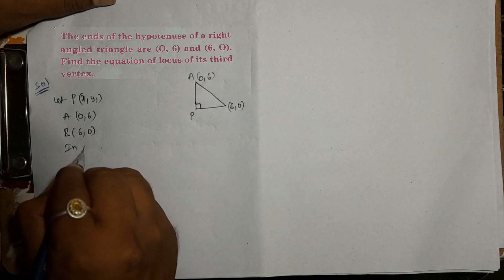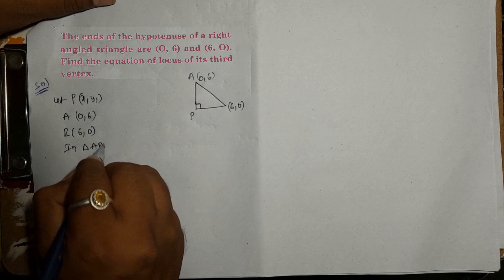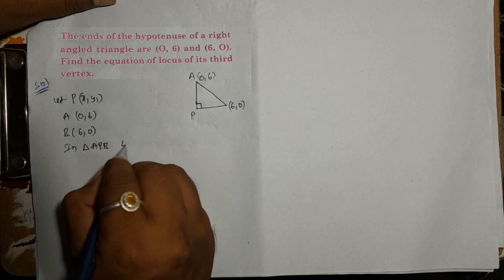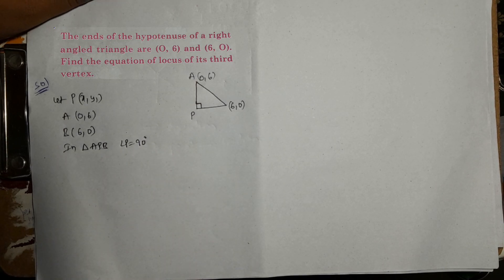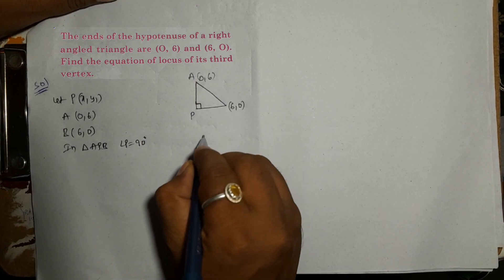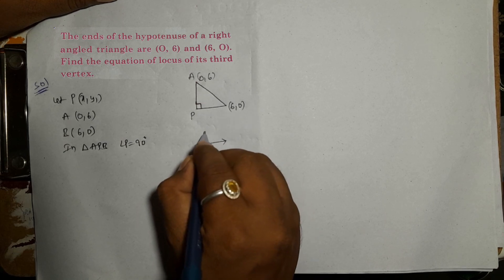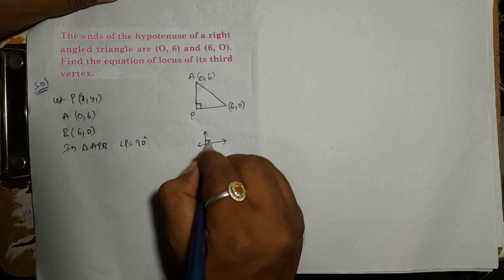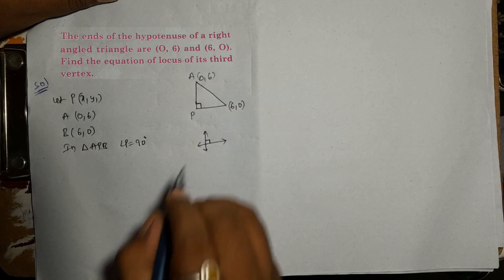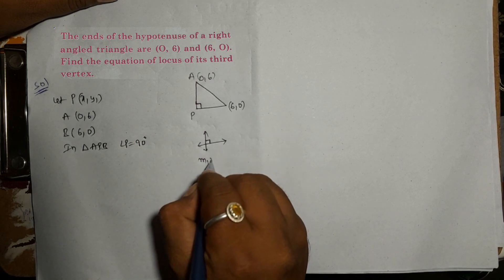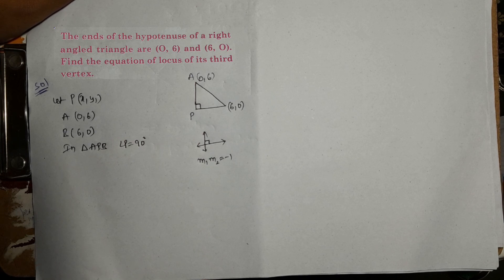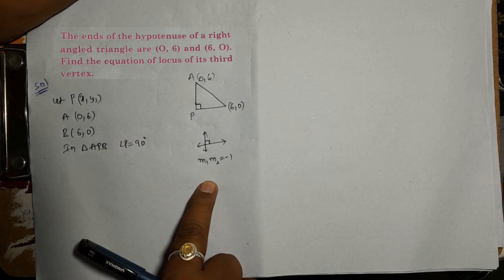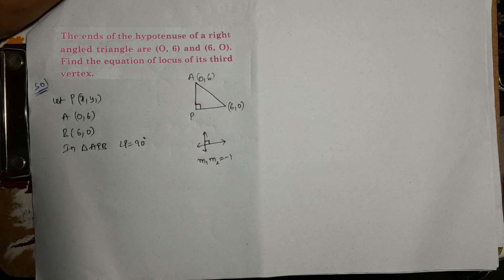In triangle APB, the angle at P is equal to 90 degrees — it is a right-angled triangle. So the two lines AP and PB are perpendicular to each other. When two lines are perpendicular, the product of their slopes M1 and M2 is equal to minus 1. This is the rule we apply here.